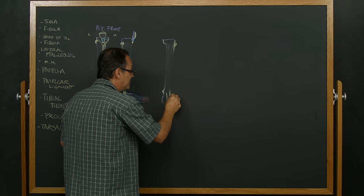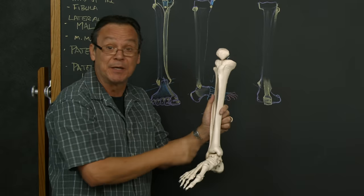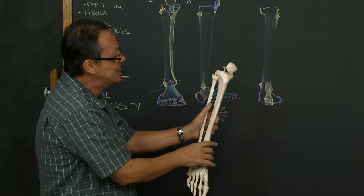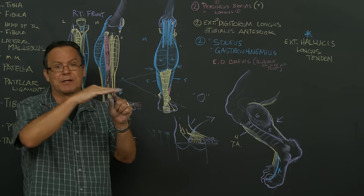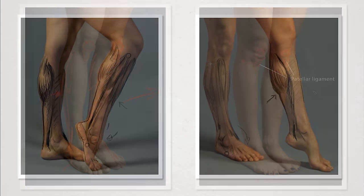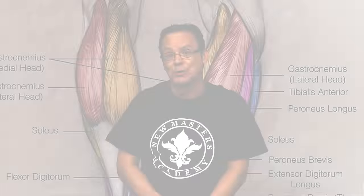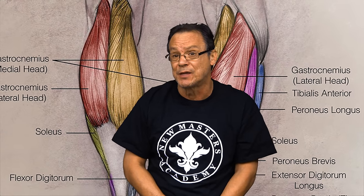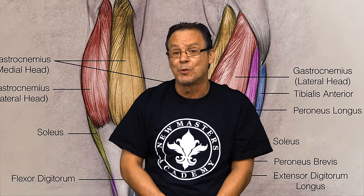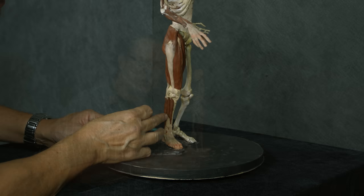We're going to do this in a variety of ways. First, we're going to go into my classroom and I will lecture on a blackboard. Then I'm going to do some draw-overs over some fabulous photographs. Then we're going to do one extra thing — a three-dimensional version of those muscles on a crochet.